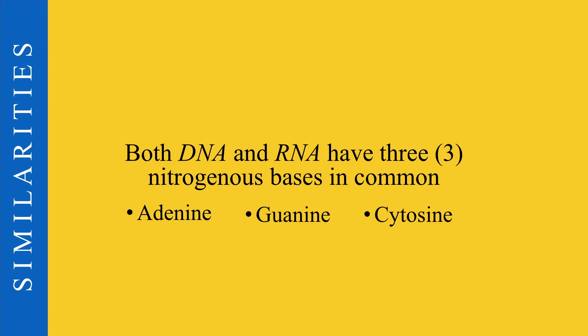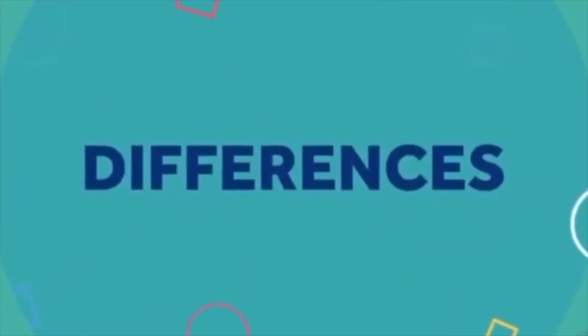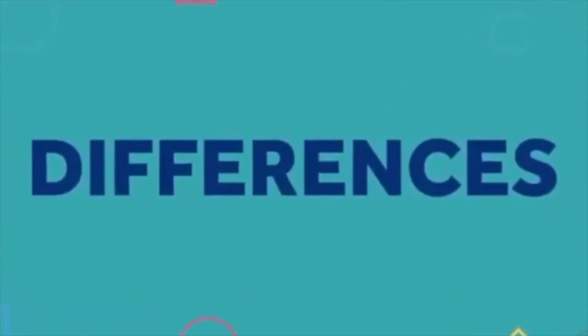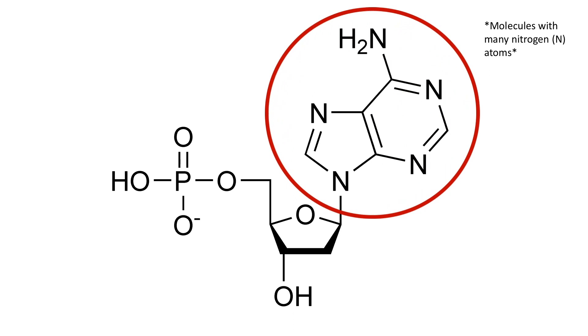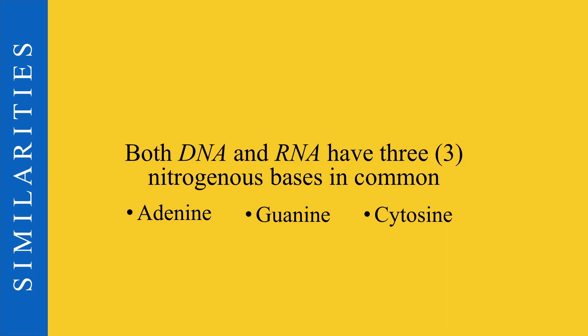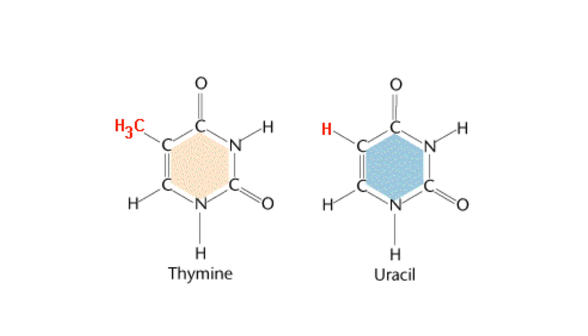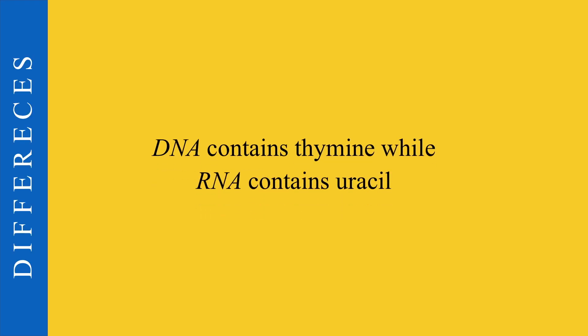But what about the other two bases? Well, this leads us to the differences between DNA and RNA. Since we were just talking about nitrogenous bases, let's talk about how they make RNA and DNA different. By now we know that DNA and RNA have three bases in common. However, thymine and uracil weren't included in that list, because thymine is only found in DNA, while uracil is only found in RNA.